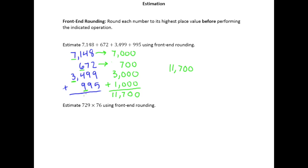And just for your information, how much we miss the actual amount by? The actual sum is 12,314. So we are definitely in the neighborhood, relatively speaking.